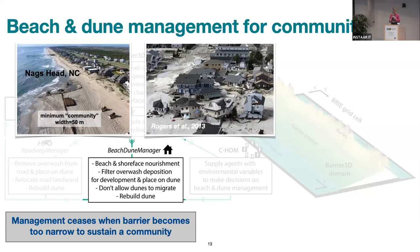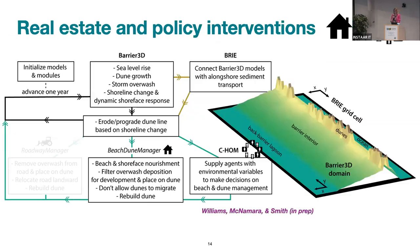Beach and dune management is a little more complex. We nourish the shoreface and the beach. We filter overwash for the effect of homes and commercial properties, meaning we don't allow it to be placed on top of the barrier. For what is actually placed on the barrier, we remove some of the overwash and put it back on the dunes. We also don't allow the dunes to migrate — we want the front line of homes to stay there. We rebuild dunes after storms. We stop management of a community when the barrier becomes too narrow to sustain a community, using a minimum community width of 50 meters based on information from Nags Head, North Carolina.